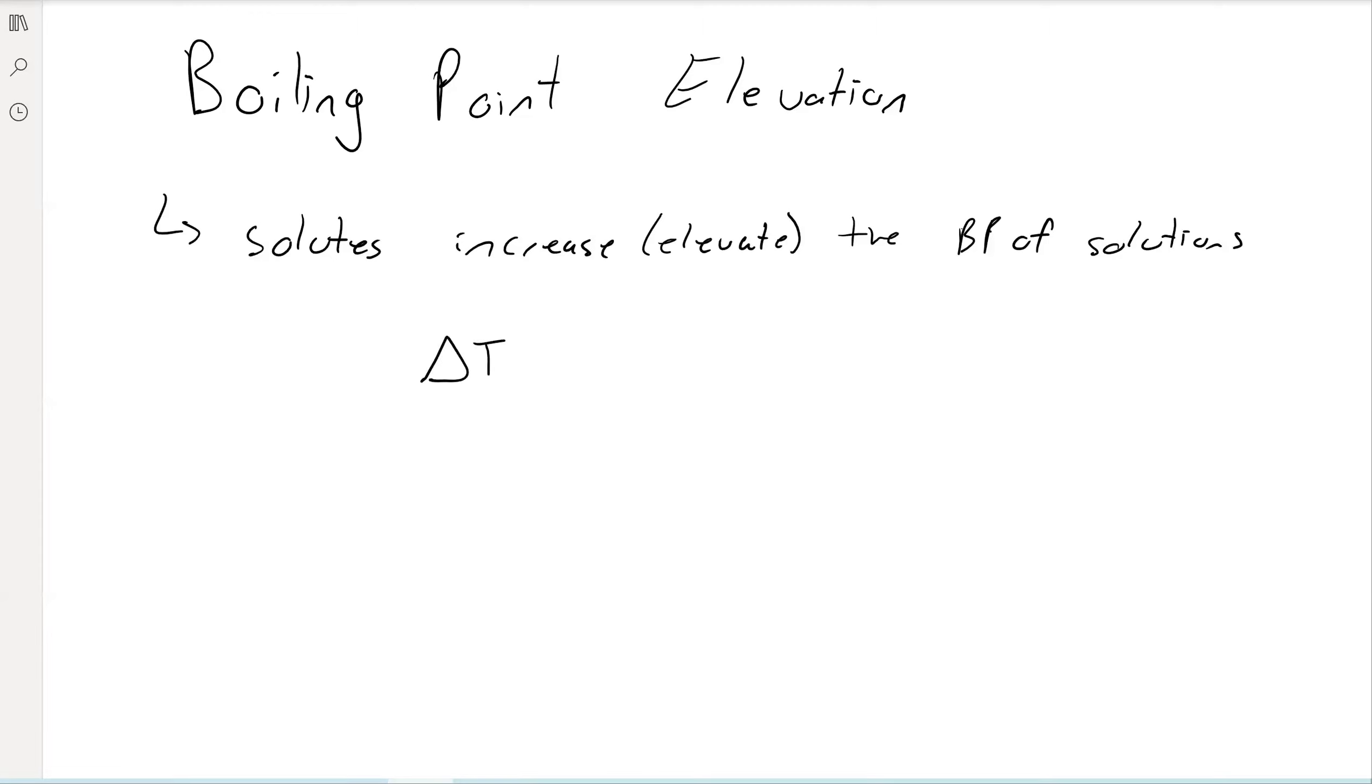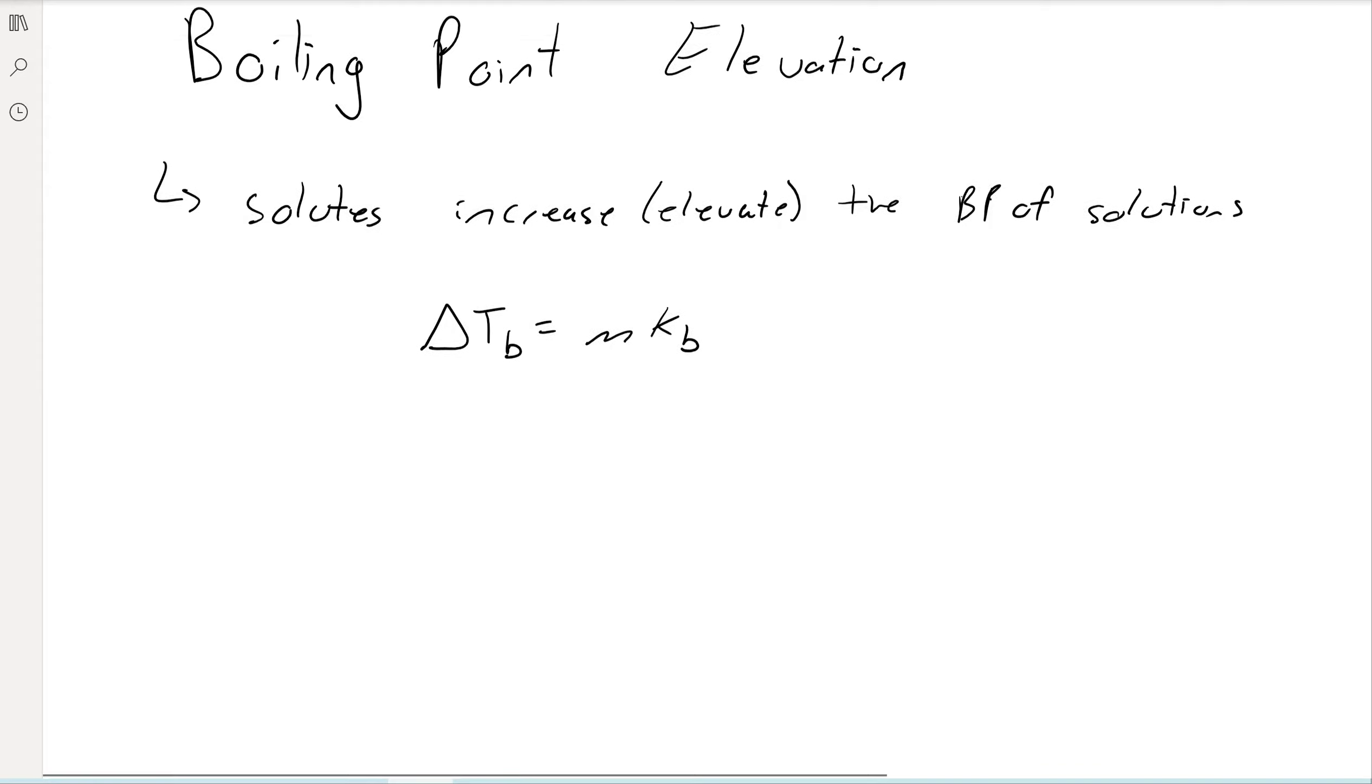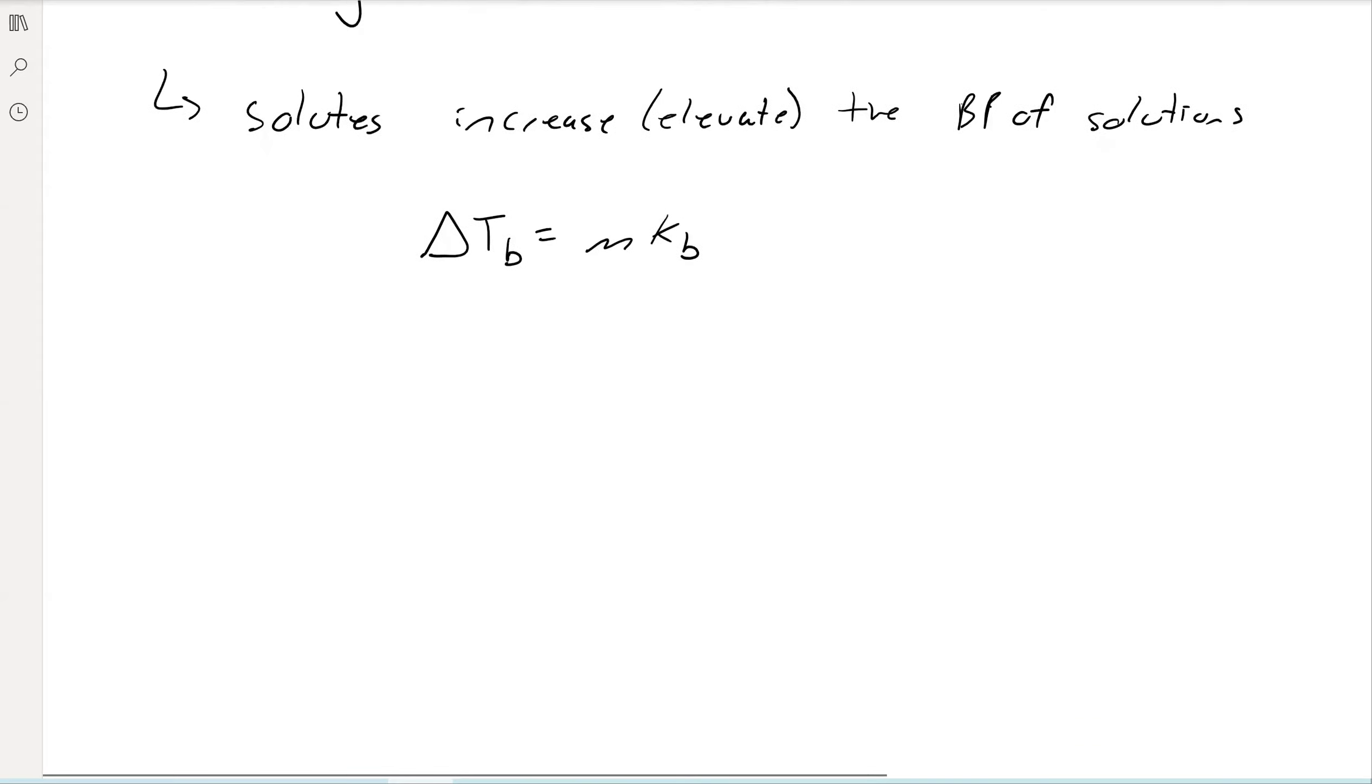The equation is essentially the same, it's delta Tb, the change in the boiling point is equal to molality times kb, which is just the boiling point elevation constant.